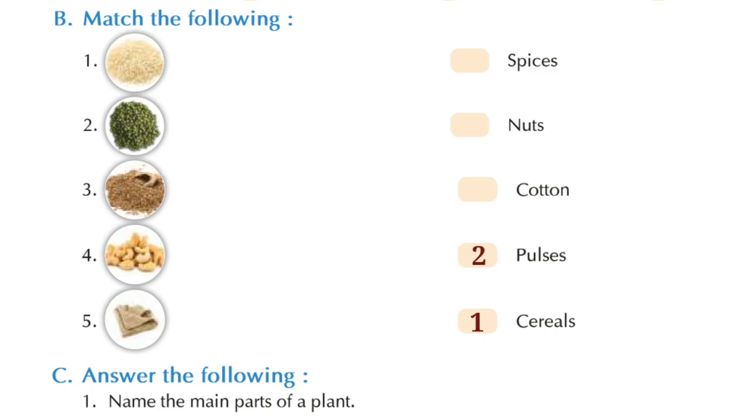Now, what do you see in the third picture? These are cumins. Children, whenever your mother makes fries and all, she adds spices such as cumins, turmeric, pepper. These all comes under the category of spices. So let's match picture three with spices.